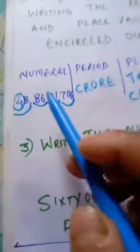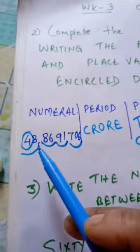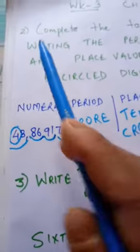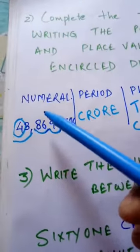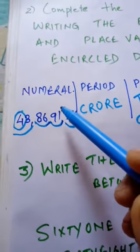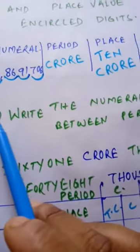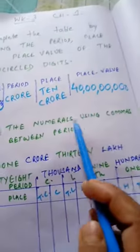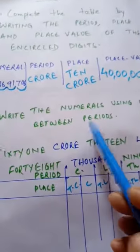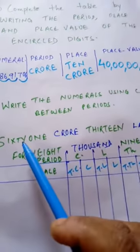Similarly children, you will complete all the questions of question number 2: A, B, C, D, whatever is given. Now come to question number 3. Write the numeral using commas between the periods.